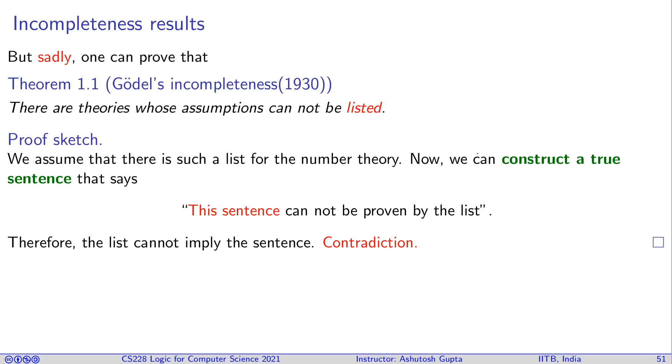The problem comes, as remember that I said self-reference is the problem. You can construct a sentence something like this: this sentence cannot be proven by the list. If you choose a list of assumptions, you can construct a mathematical statement which itself says that you cannot prove it from the list. If that construction is possible, then you have a weird situation. For any given list, there is always a statement that is true in the theory but cannot be implied by those set of statements.